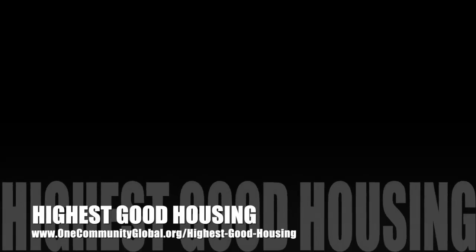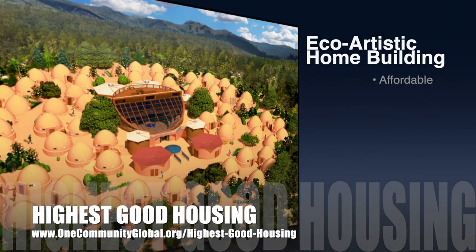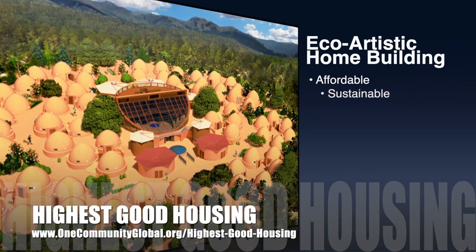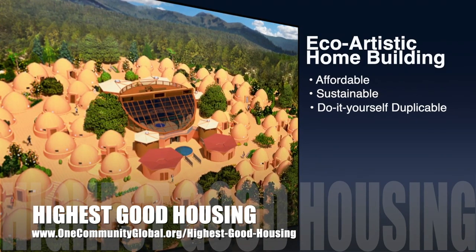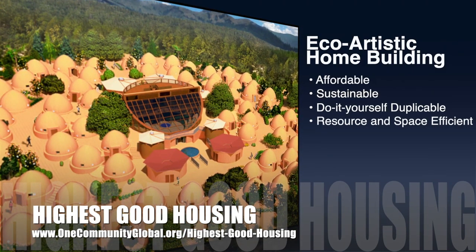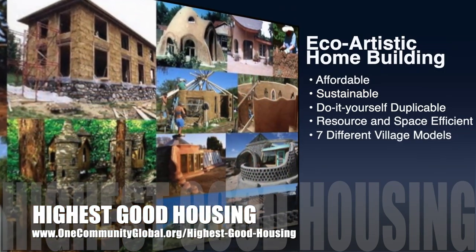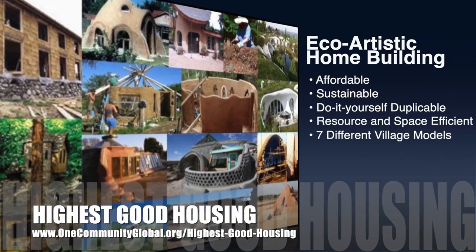The One Community approach to Highest Good Housing is eco-artistic home building that is affordable, sustainable, do-it-yourself duplicable, resource and space efficient, and consists of seven different sustainably constructed village models.